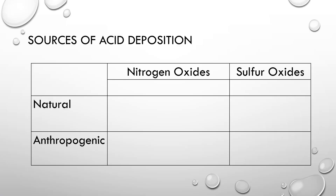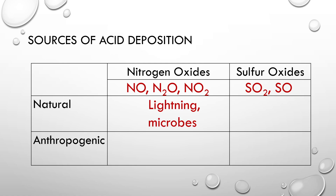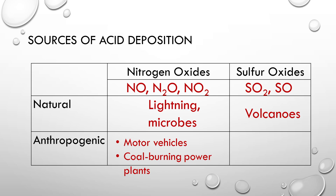So where does acid deposition come from? It comes from natural and anthropogenic sources. We look at nitrogen oxides — nitrogen monoxide, dinitrogen oxide, and nitrogen dioxide — as well as sulfur oxides like sulfur dioxide and sulfur monoxide. These can eventually form nitric acid and sulfuric acid in the atmosphere. Nitrogen oxides come naturally from lightning and microbes, specifically nitrogen-fixing bacteria. Sulfur oxides naturally come from volcanoes. As far as anthropogenic sources, nitrogen oxides come from vehicles and coal-burning power plants, while coal-burning power plants are really the main source for sulfur oxides.